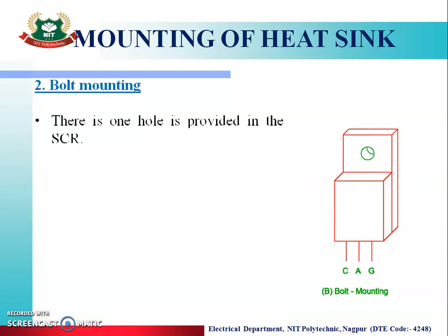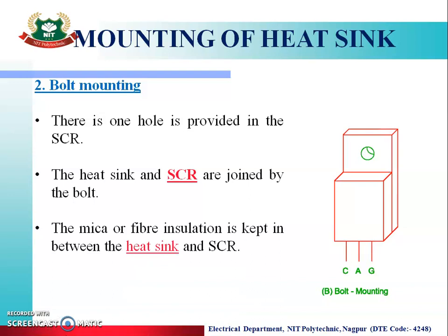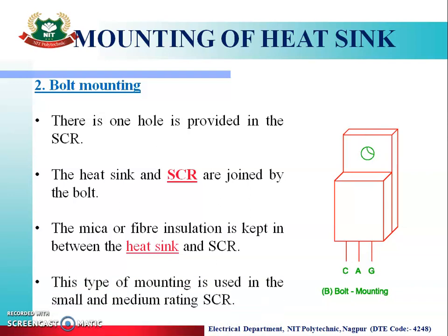The second one is the bolt mounting method. One hole is provided in the SCR so that the heat sink and the SCR are joined by the bolt. The mica and fiber insulation is kept in between the heat sink and SCR to provide electrical insulation. This type of mounting is used for small and medium rating of SCR.